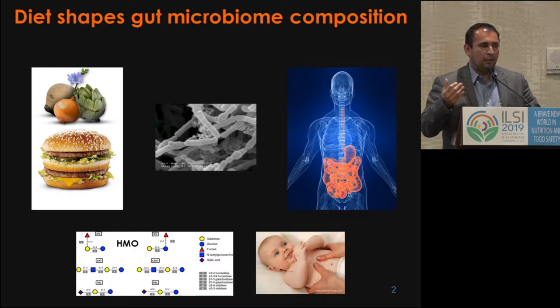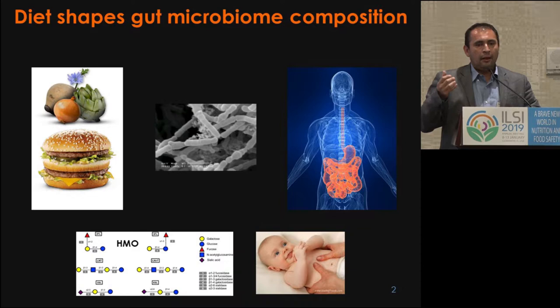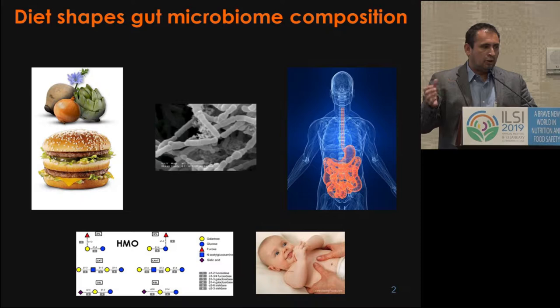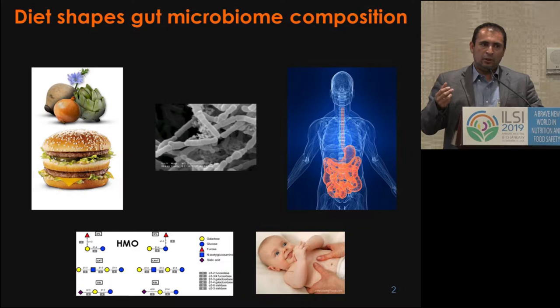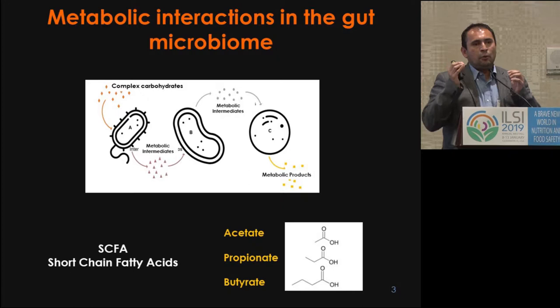In the gut microbiome, it's a really complex community of trillions of microbes. In general, complex polysaccharides can be fermented or accessed by a few gut microbes that we call primary fermenters. They share metabolic intermediates with a different set of microbes called secondary fermenters. It's like a trophic chain that results in the production of different metabolites, where acetate, propionate, and butyrate are key short-chain fatty acids that result in several health benefits for the host.